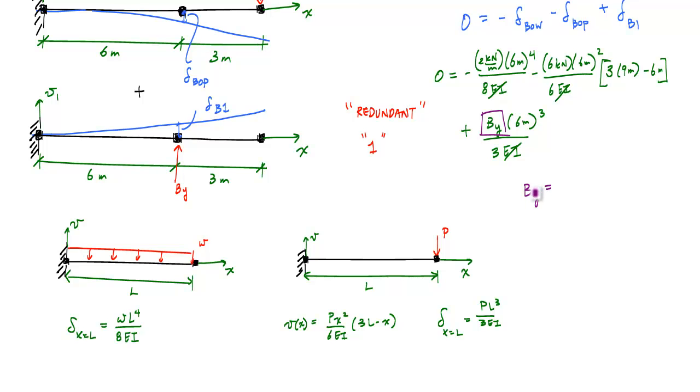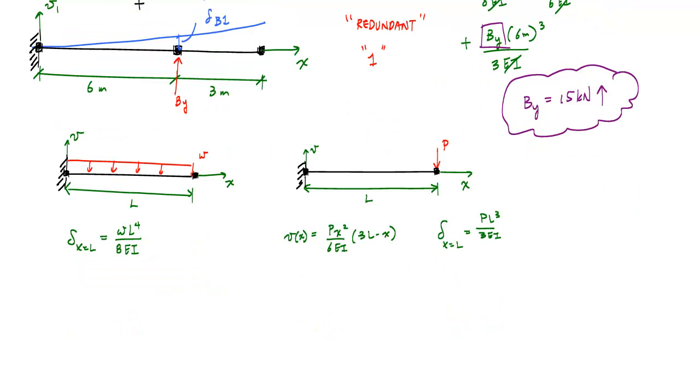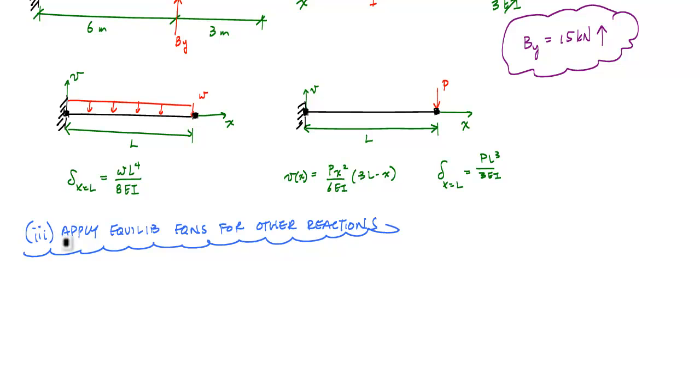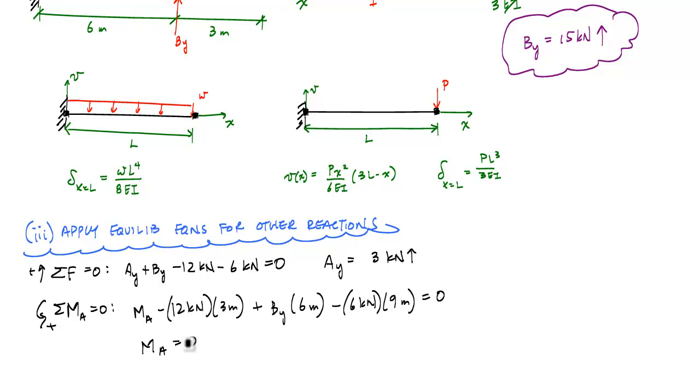What's next is that you have to apply the remainder of the equilibrium equations to solve for the other reactions. From my original structure, if I do sum of the forces in the vertical equal to 0, this would tell me that A_y is equal to 3 kilonewtons upwards. Then I can do sum of the moments about point A equal to 0, and this tells me the moment at A is 0. So that's great.